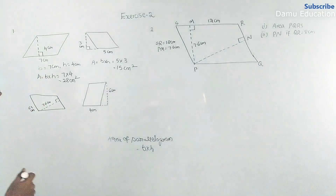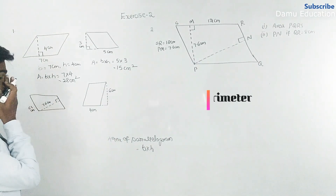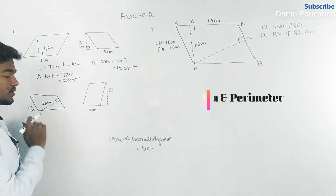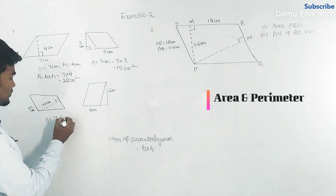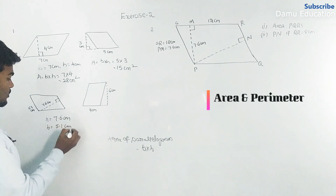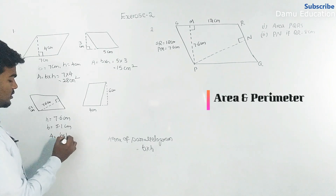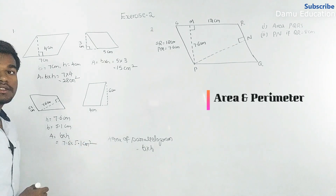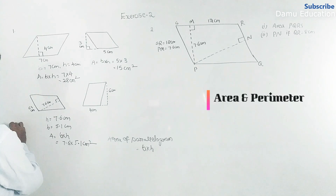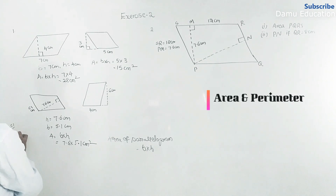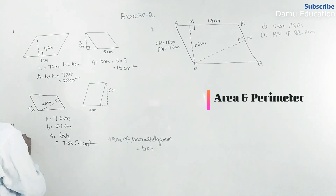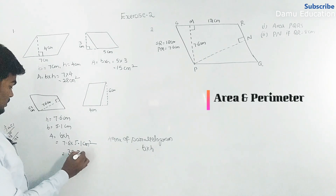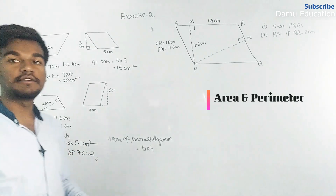For the third one, the perpendicular distance is the height. Height equals 7.6 centimeters and base equals 5.1 centimeters. Area equals base into height, that is 7.6 into 5.1, giving a final area of 38.76 centimeters square.